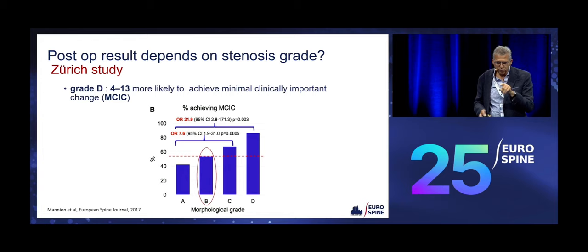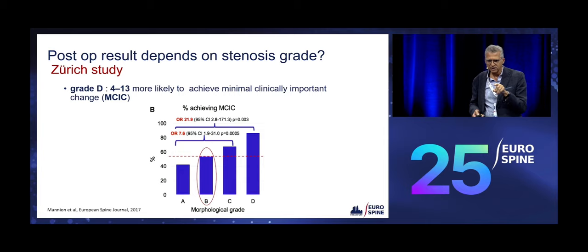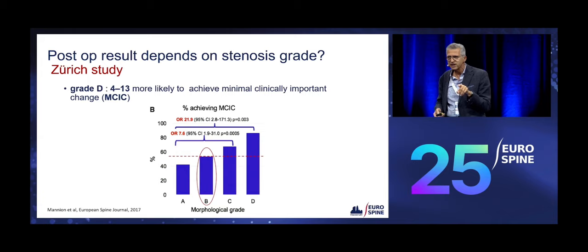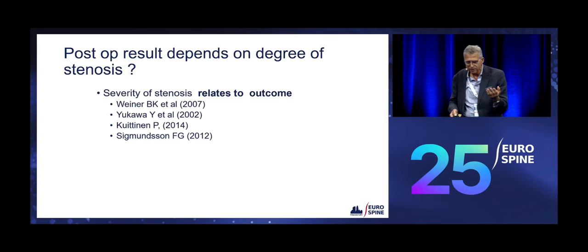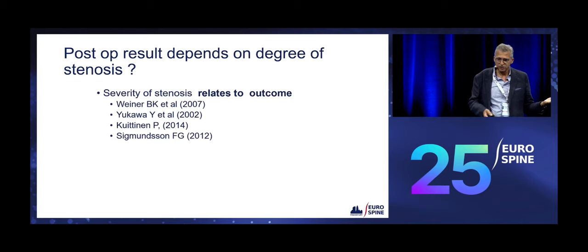Conversely, if you operate on a Grade A, you have a 40% chance of getting better — should we really operate on those patients? And Grade B is like tossing a coin: 50% of B's get better with surgery. I like this because this is what I've been doing, but I'm trying to convince other colleagues to do the same thing.